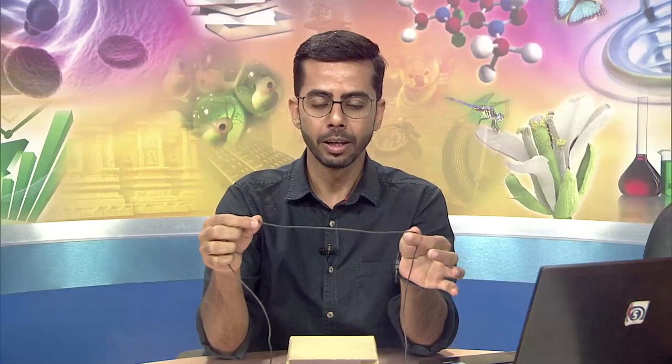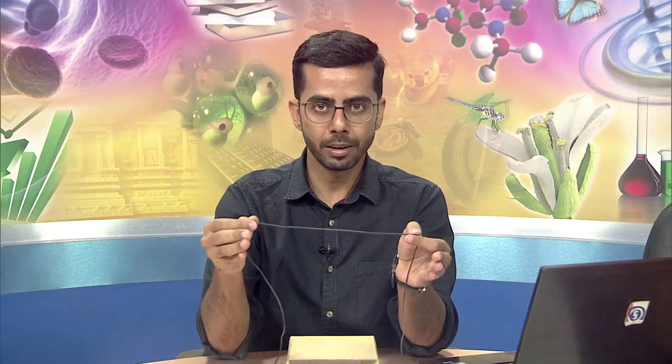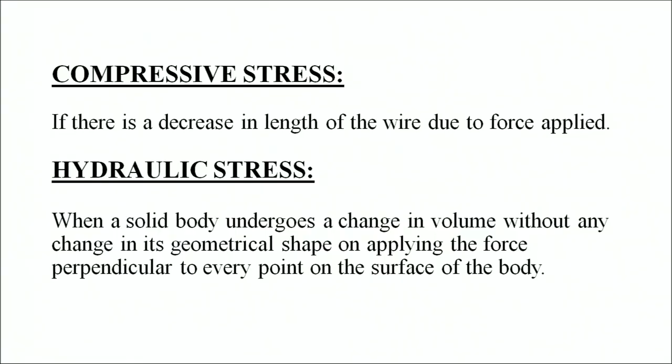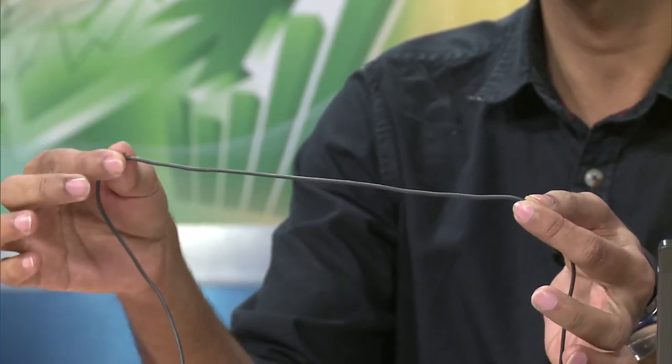Similarly, if an external force is applied inward on the wire, it gets compressed. This is compressive stress — when there is a decrease in the length of the wire due to the force applied. The force applied is again normal to the surface.